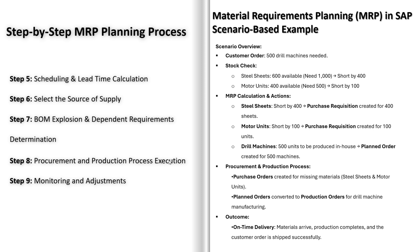As soon as the raw materials arrive, SAP records a goods receipt, updating the inventory in real time — production can continue without interruption. The drill machines are fully manufactured and ready for shipping, and the order is delivered to the customer on time. To summarize: Step 1 — check stock levels; Step 2 — identify material shortages; Step 3 — generate procurement and production proposals; Step 4 — execute procurement and production; Step 5 — receive materials and complete production. By running MRP, we ensured materials were available on time, production ran smoothly, and customer orders were delivered without delays. That's the power of MRP in SAP.